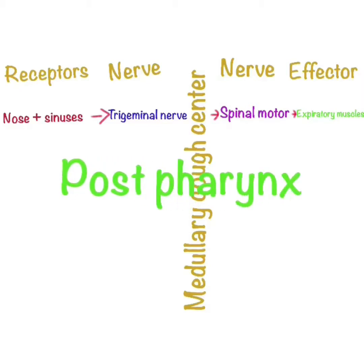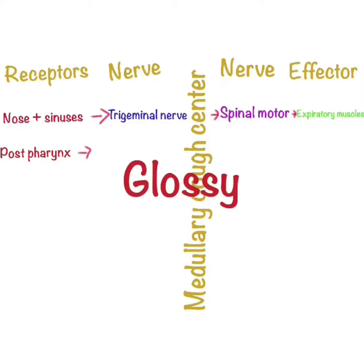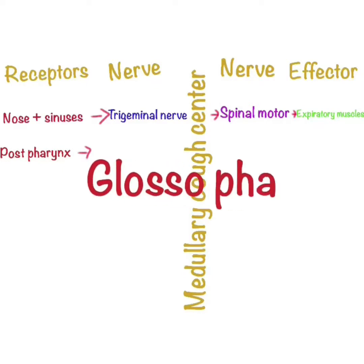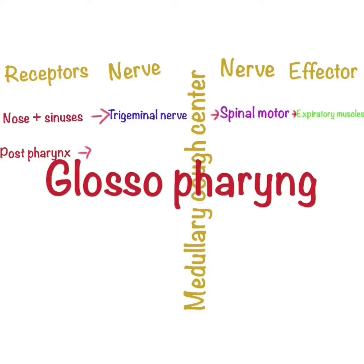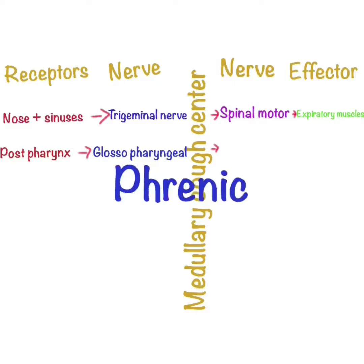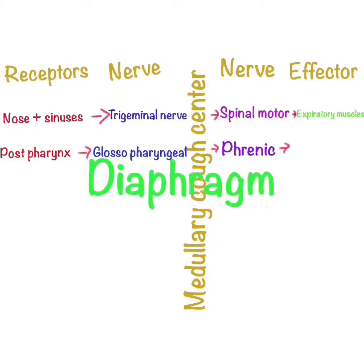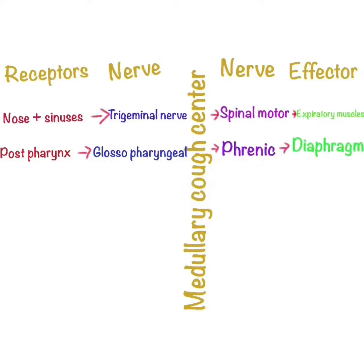The second sensory receptor is the posterior wall of pharynx. When there is some stimulus on the posterior wall of pharynx, it travels through the glossopharyngeal nerve to the medullary cough center. The medullary cough center generates a response through the phrenic nerve, which goes to the diaphragm. The diaphragm, which is our muscle, contracts and as a result, the cough is generated.